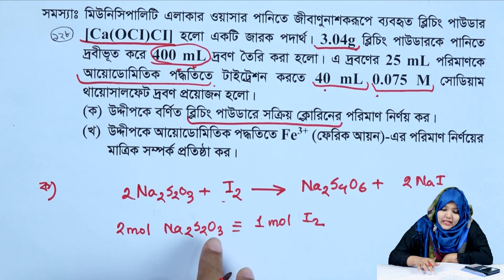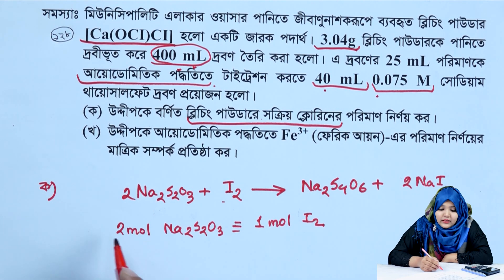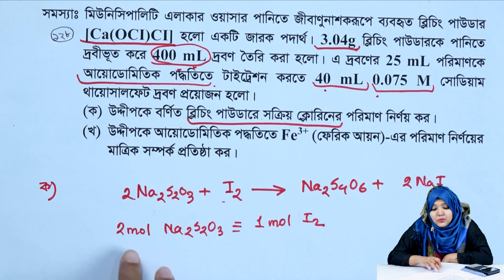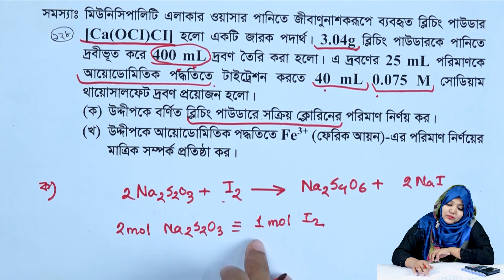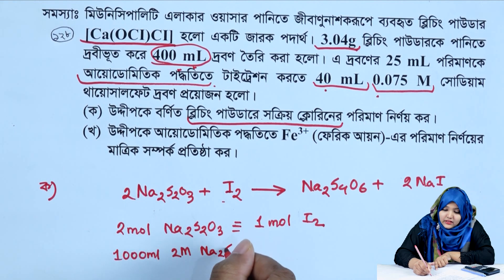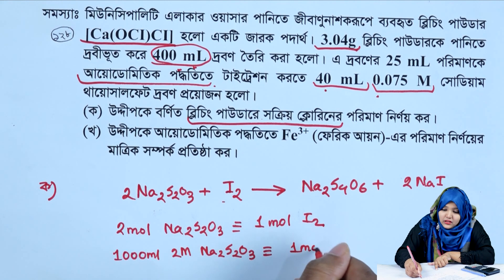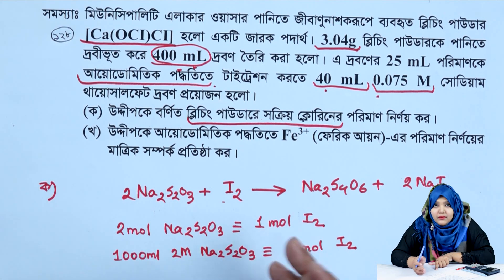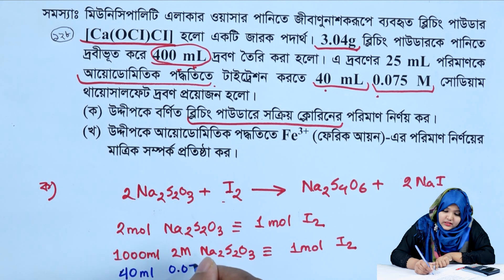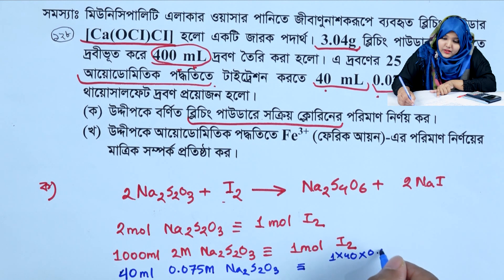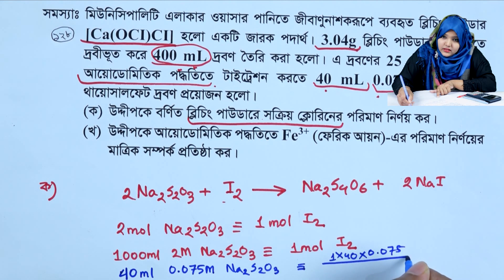2 mol sodium thiosulfate is equivalent to 1 mol iodine. Therefore: 40 milliliters of 0.075 molar sodium thiosulfate is equivalent to 1 × 40 × 0.075 divided by 1000 divided by 2 moles of iodine.